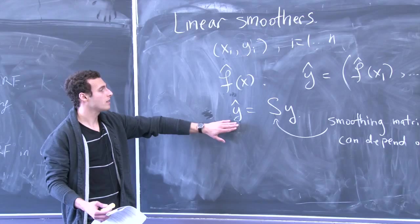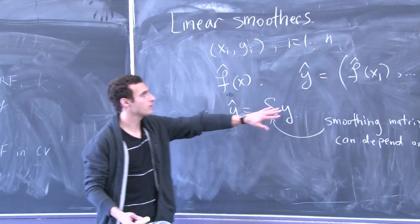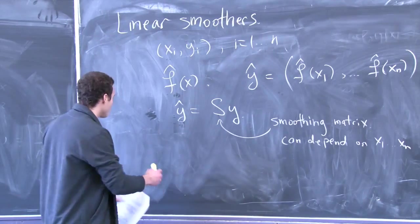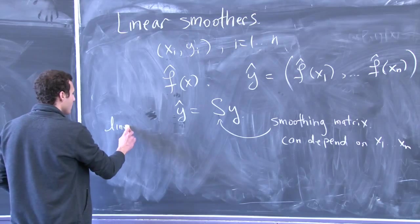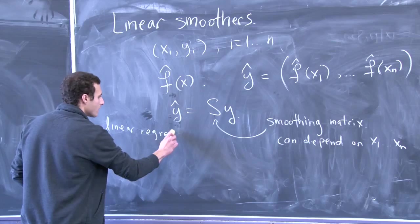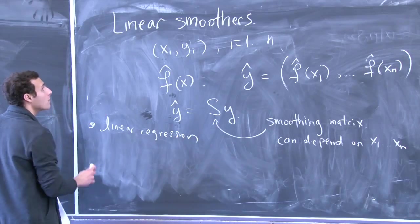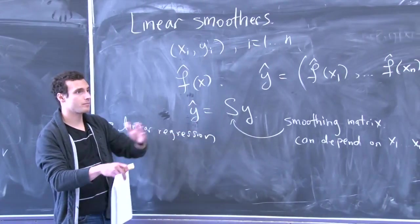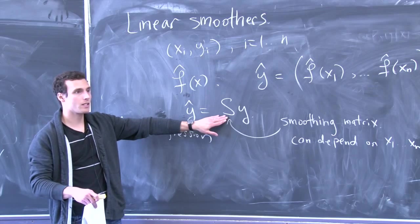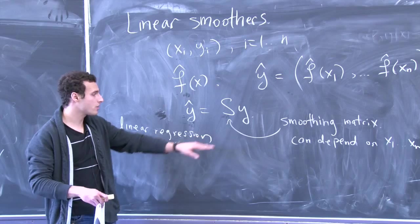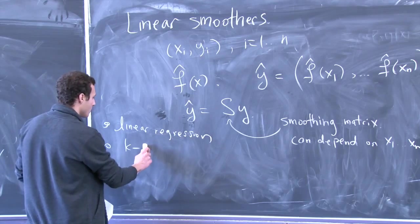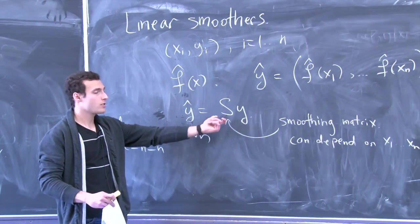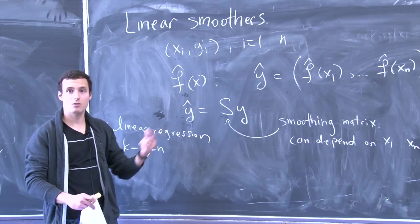When we talk about a linear smoother, it means that the fitted values y-hat — which is the vector f-hat(x_1) through f-hat(x_n) — is just some linear transformation of y. Linear regression is a case of a linear smoother. If I were to linearly regress y_i on the x_i's, these would just be given by the hat matrix: X(X^T X)^{-1} X^T. K nearest neighbors are also an example — each fitted value is just given by a local average of the y's. The rows of S contain 1/k in certain spots.